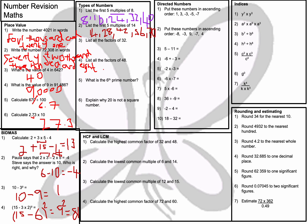Question number 3: list all the factors of 32. Factors are numbers that go into 32 — whole numbers that multiply to give 32. So 1 and 32, because 1×32=32; 2 and 16; 4 and 8, because 4×8=32. The factors are 1, 2, 4, 8, 16, and 32 — all the numbers that go into 32 without a remainder.